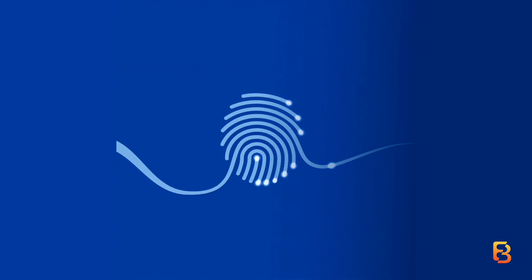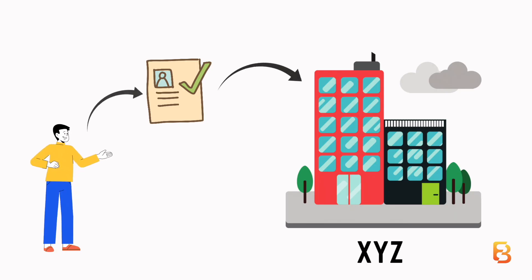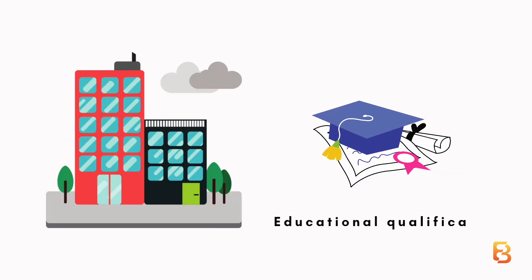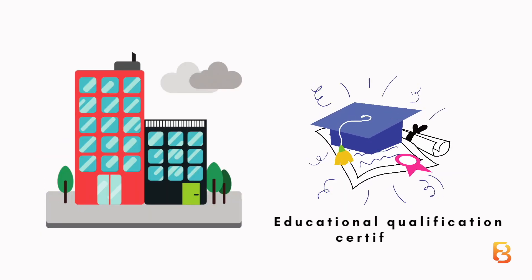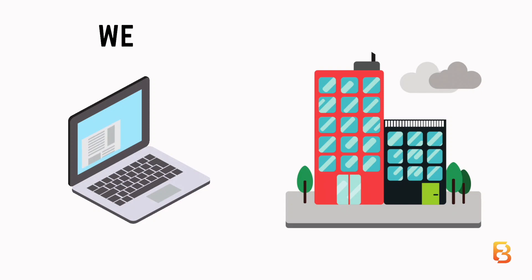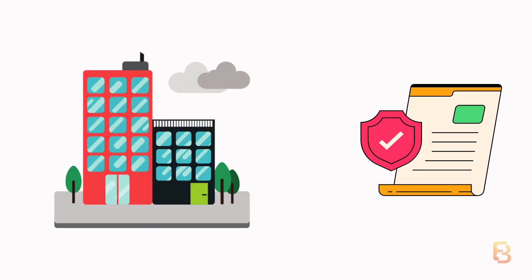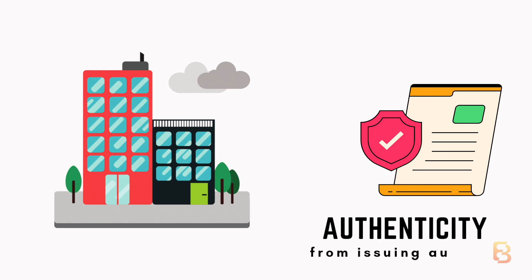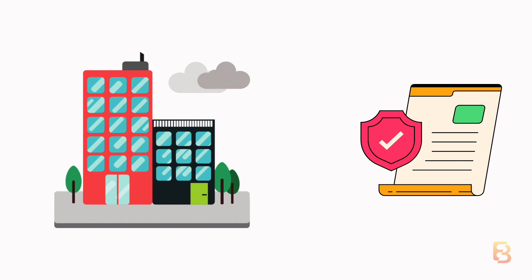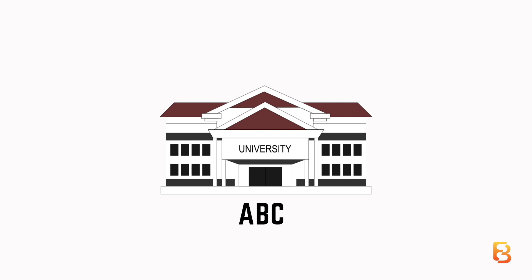Let's say John has applied for a job at Firm XYZ. XYZ requests his educational qualification certificate. In Web2, this would entail sharing a soft copy of the original certificate, and then XYZ corroborating its authenticity with the issuing authority — for the sake of the example, let's call it University ABC.